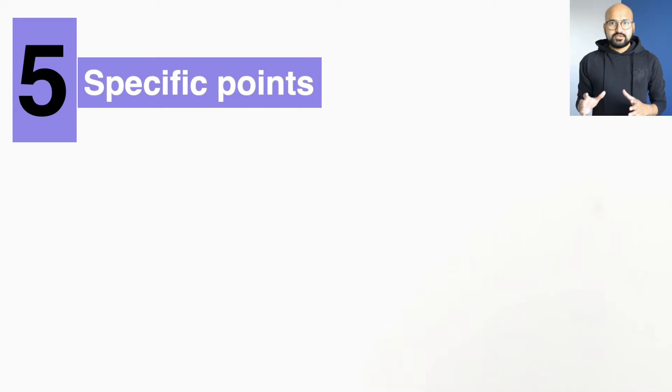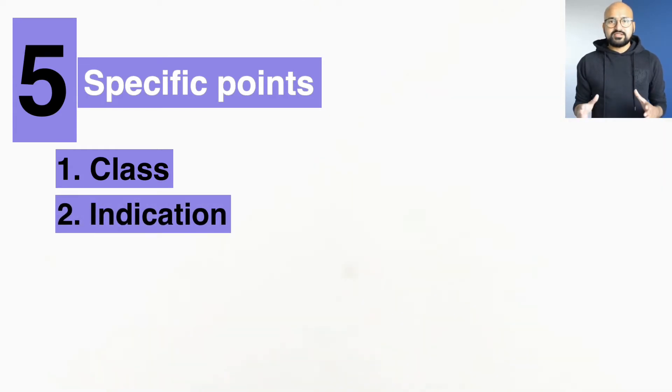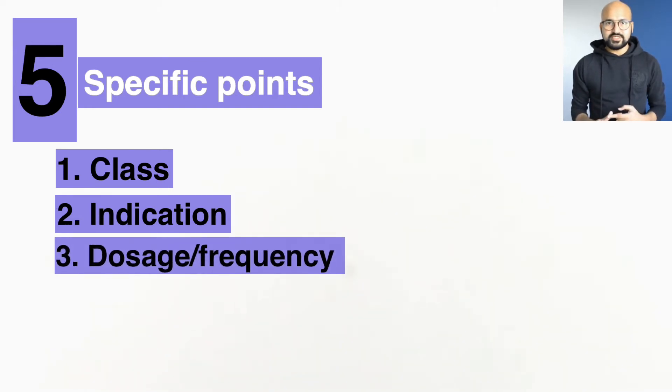The first specific point you could mention is drug class - which class the drug belongs to. The second specific point is the indication - what the drug is used for. The third specific point is dosage and frequency - what's the usual dose range for this medication, the minimum or maximum dose range, and how often this medication needs to be taken, like once a day, twice a day, or once a week.